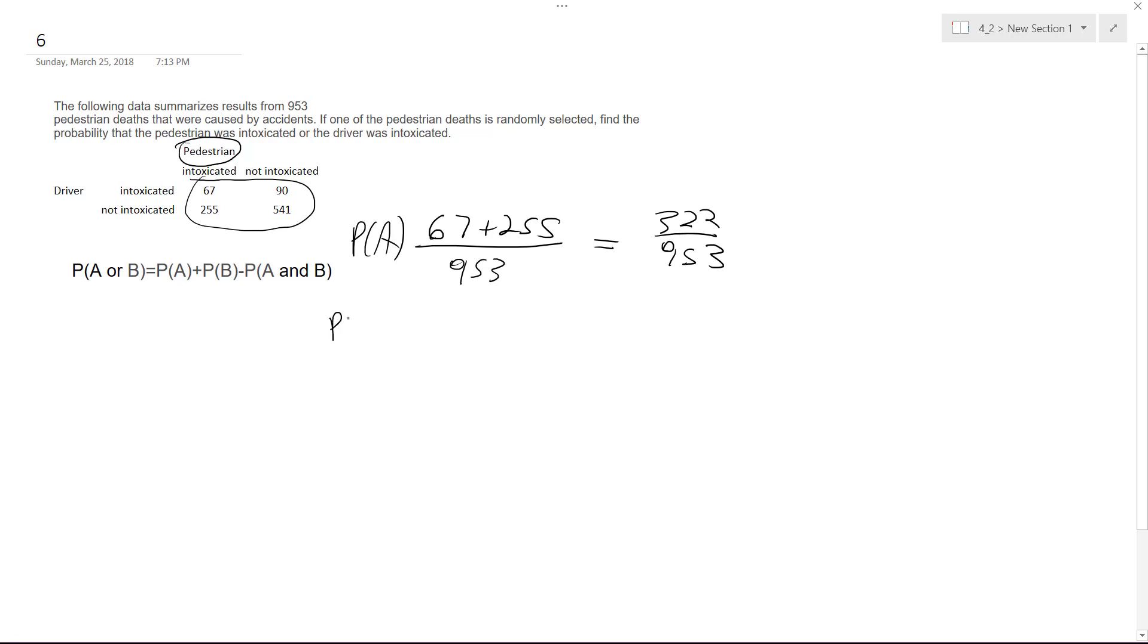Alright, so probability of B, same concept, so it's going to be instead here it's drivers, so it's going to be 67 plus 90. Yeah, so drivers know that it's in their best interest never to drink and drive. So 90, so it ends up being 157 over 953.